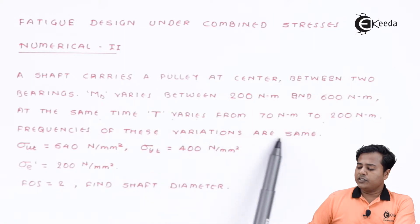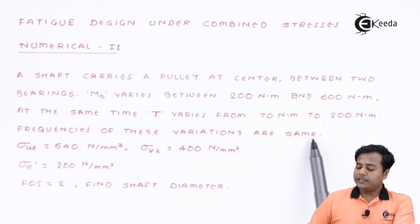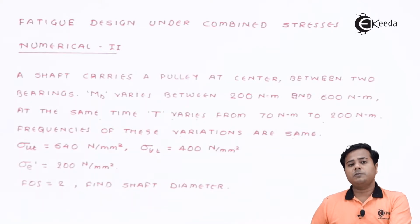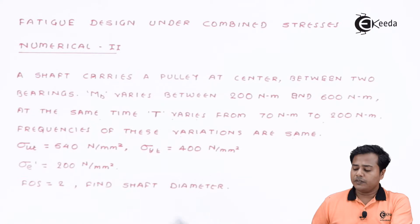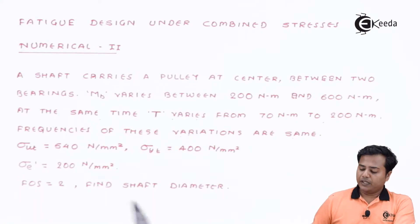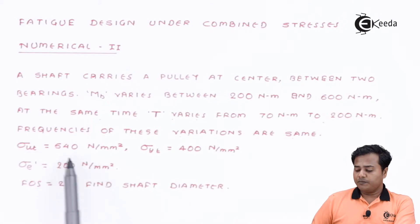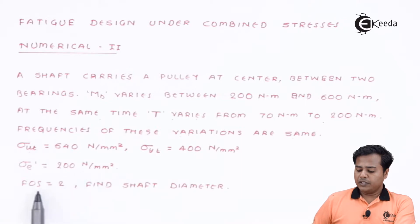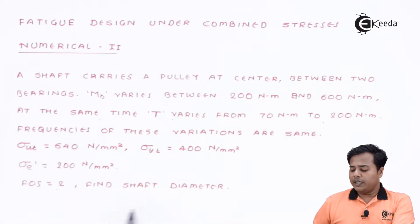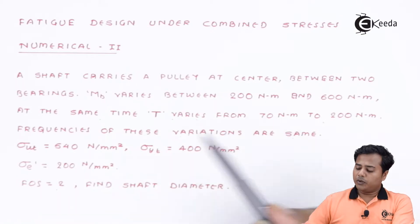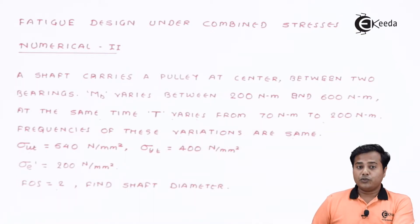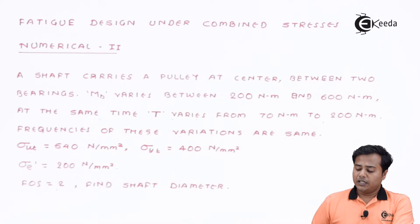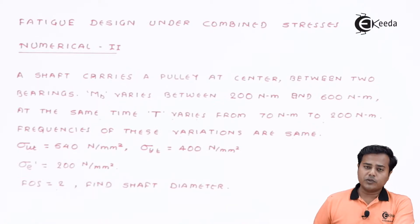The frequencies of these variations are the same, changing in sync with the speed of the shaft. The material properties given are: ultimate strength 540, yield strength 400, and corrected endurance limit 200. Factor of safety is also given. We need to find the shaft diameter. This problem falls under the fluctuating load category with combined bending and torsional moments.